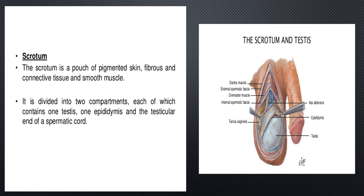The vas deferens is also called the ductus deferens. It is a part of the male reproductive system of many vertebrates. These ducts transport sperm from the epididymis to the ejaculatory ducts.